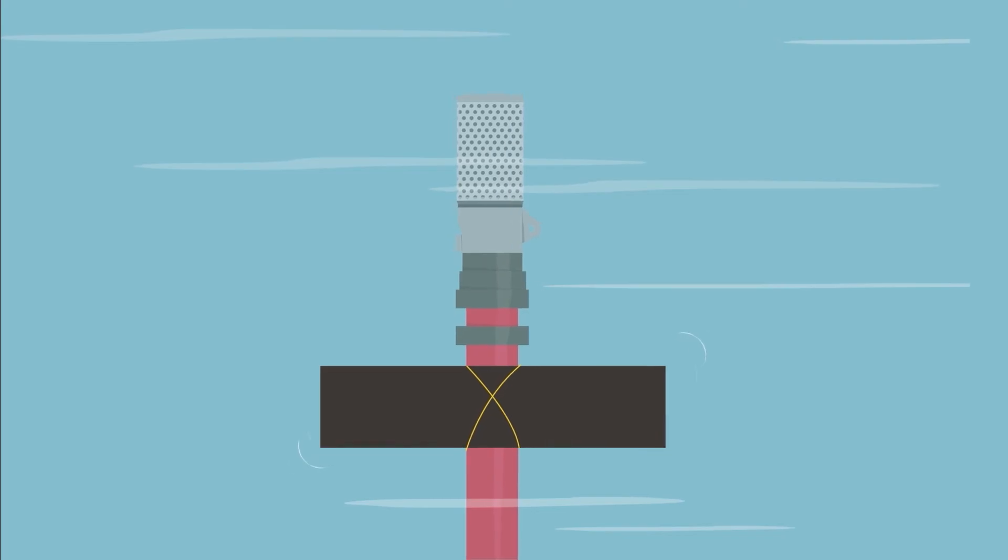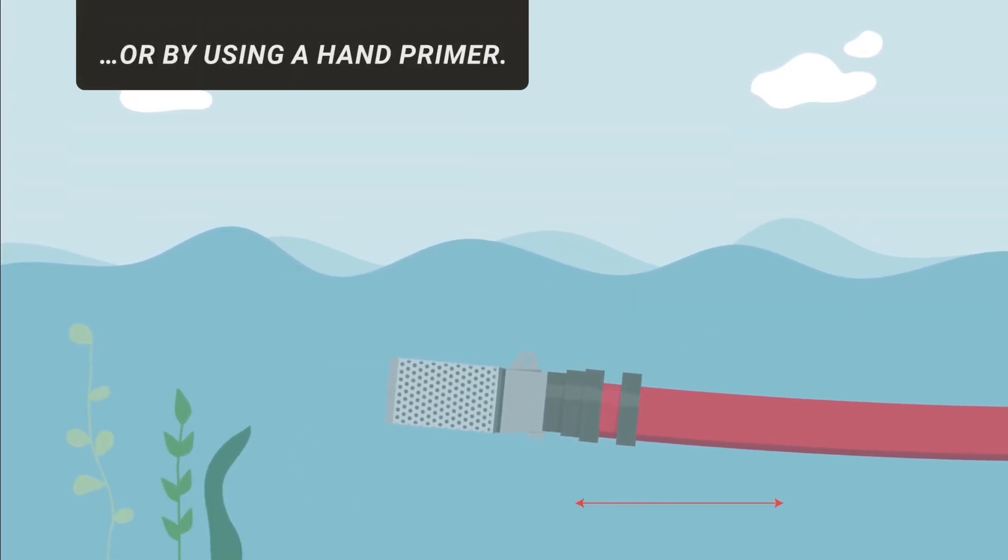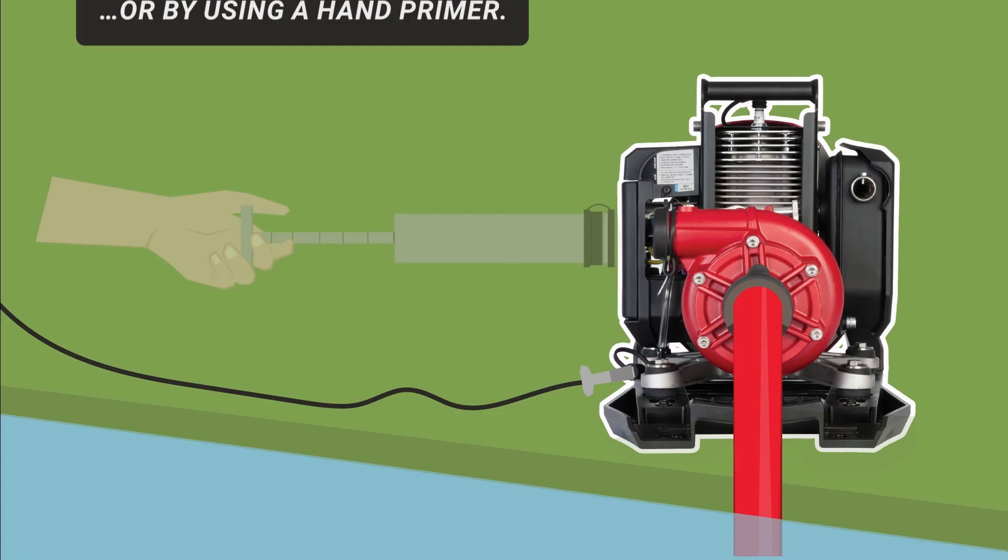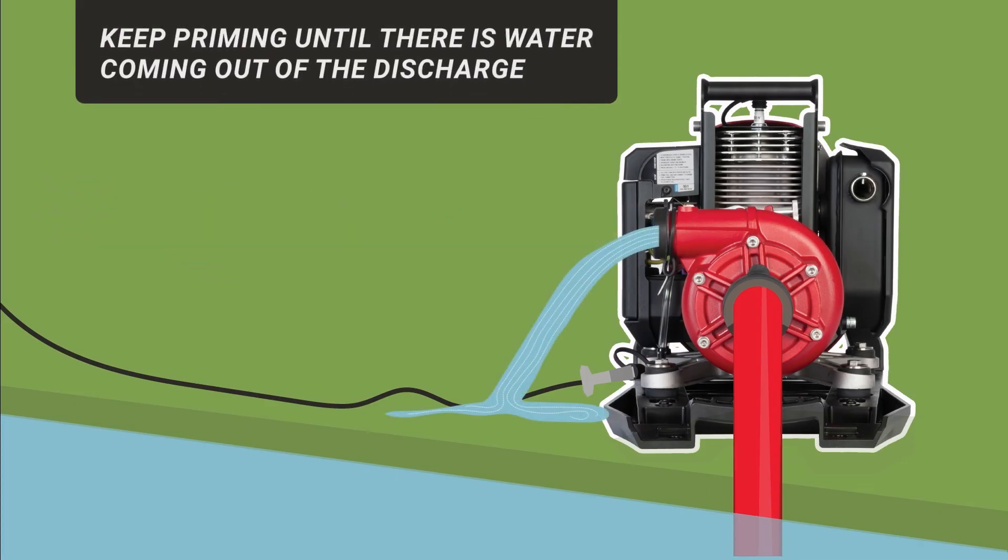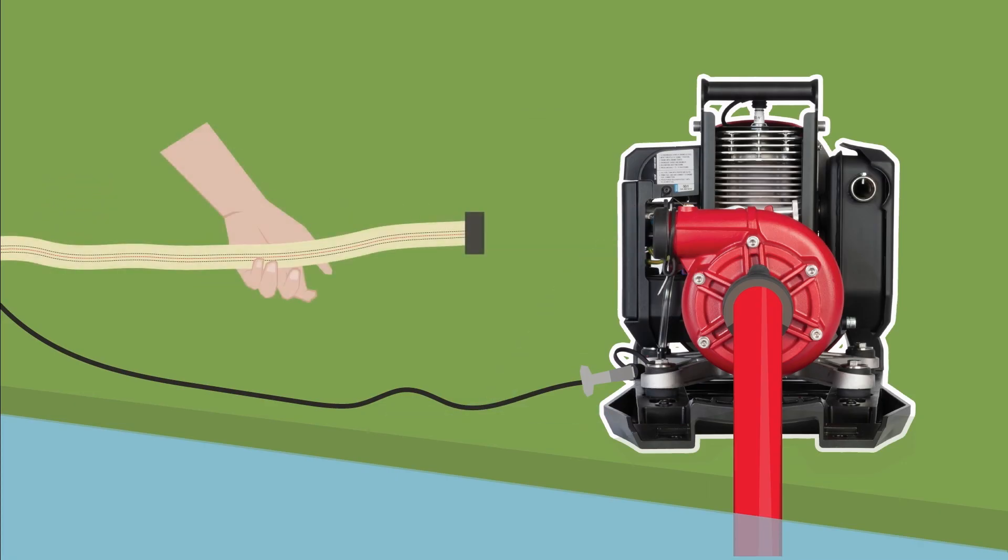Priming the pump end can be done by either agitating the foot valve or by using a hand primer. Keep priming until either there is water coming out of the discharge or out of the spout on the hand primer.